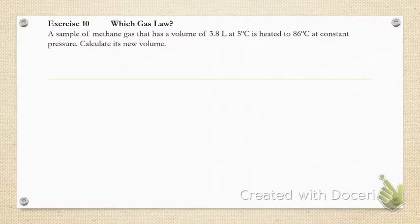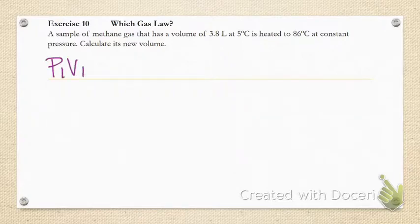This says a sample of methane gas has a volume of 3.8 liters at 5 degrees celsius and is heated to 86. Here's the deal: as soon as you see a gas problem with one parameter with two values being changed, it's going to be one of the basic gas laws. We revert back to the combined gas law and leave out what we don't need. I saw temperature change, so I'm not using the ideal gas law. It says constant pressure, so I'm going to take out pressure.